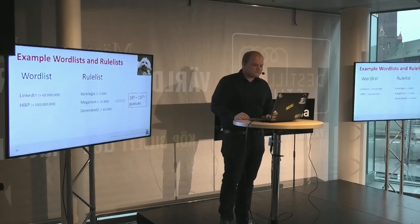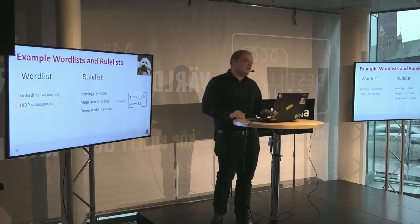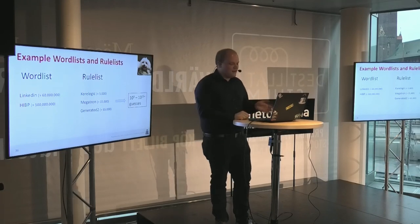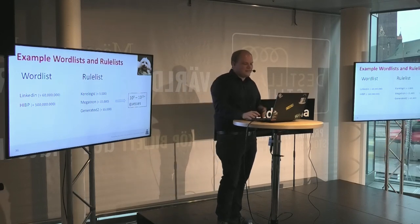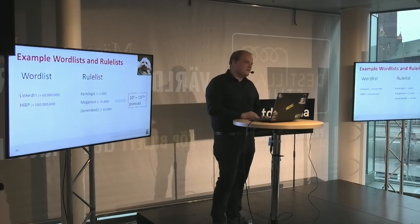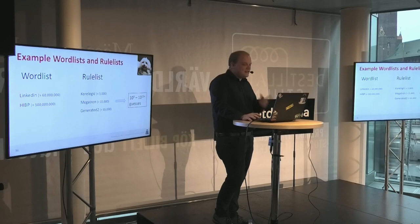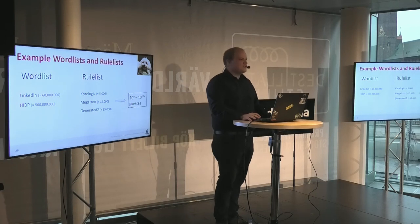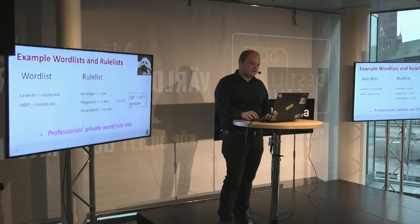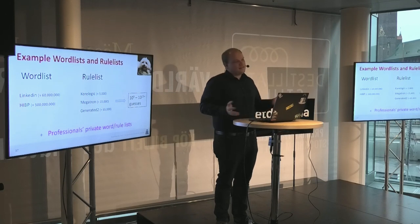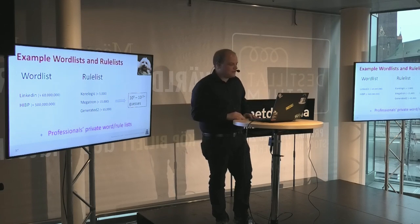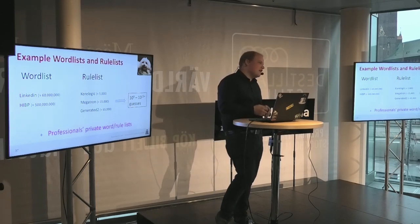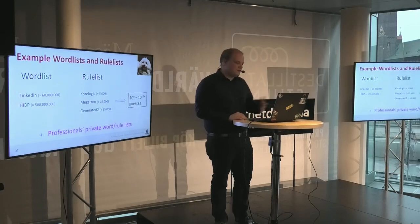A word list can have 60 million up to 500 million passwords. The rule list can have 64 rules, 5,000 rules, or 65,000 rules. If you do the math, you end up with a trillion or even a quadrillion guesses — a very large number. There is evidence that professionals like Sinusho Prime and Team Hashcat have their own private word and rule lists that are more efficient, and for academics it's rather complicated to catch up with them. That's why we are fortunate that our new tool makes it easier to solve this problem. Blaise will describe how we do it.